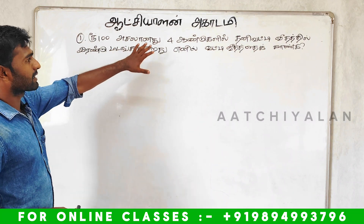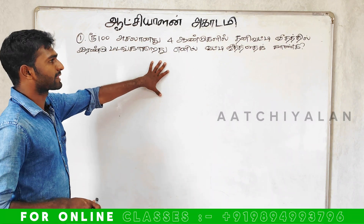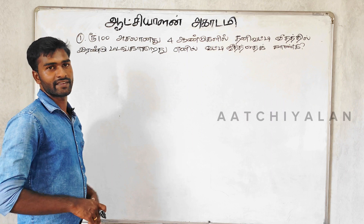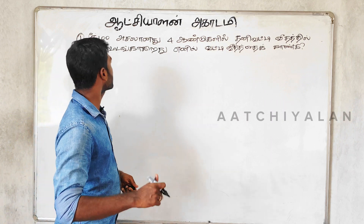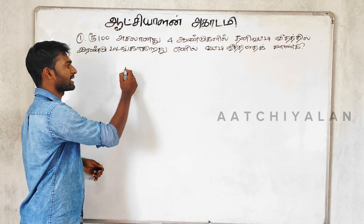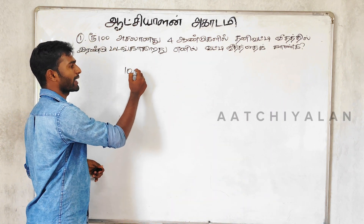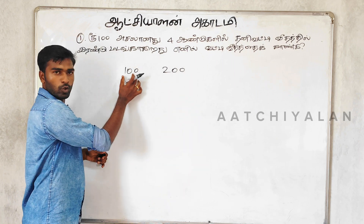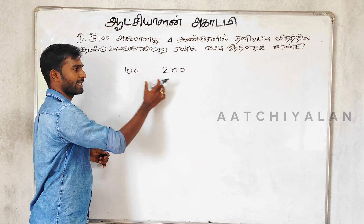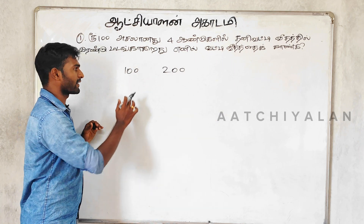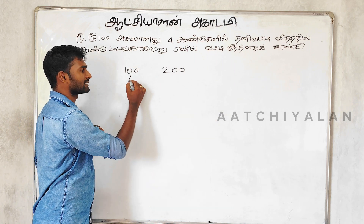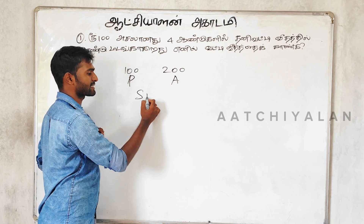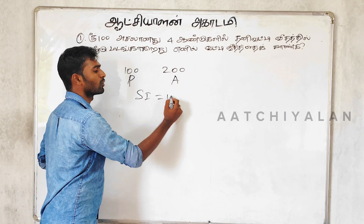100 principal. For simple interest: for 4 hours, for 2 hours, for 100 hours, for 200 hours. That's the principle. For simple interest, for 100.